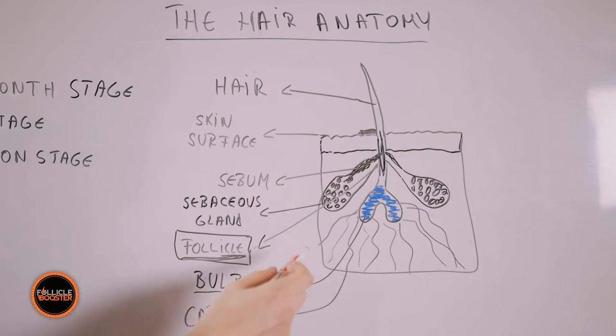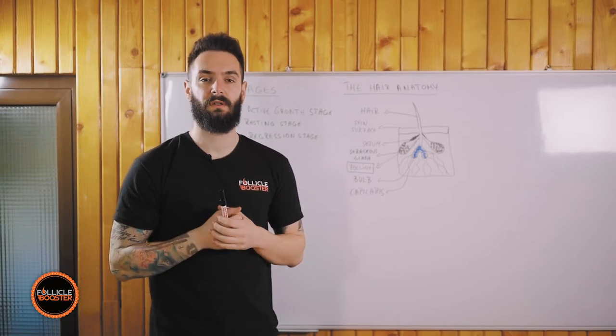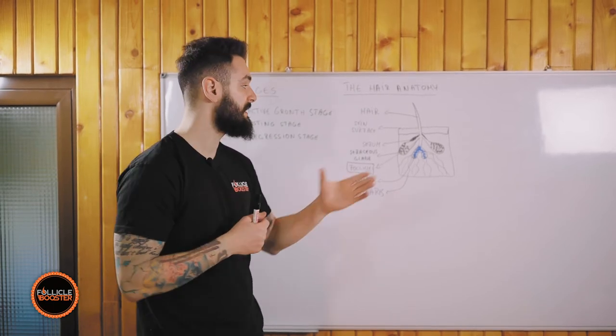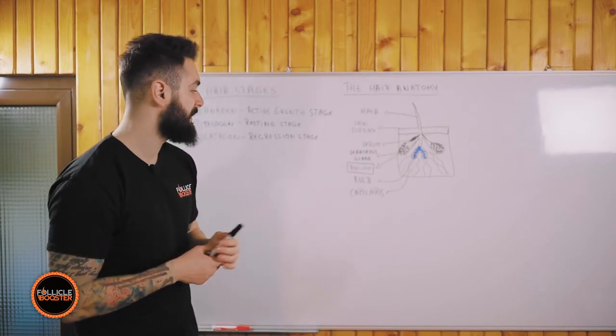The bulb is actually, let's say, the root of your hair, of your hair growth, of your follicle, where all the nutrients and all the substances are going to be received through here and delivered to the whole hair.